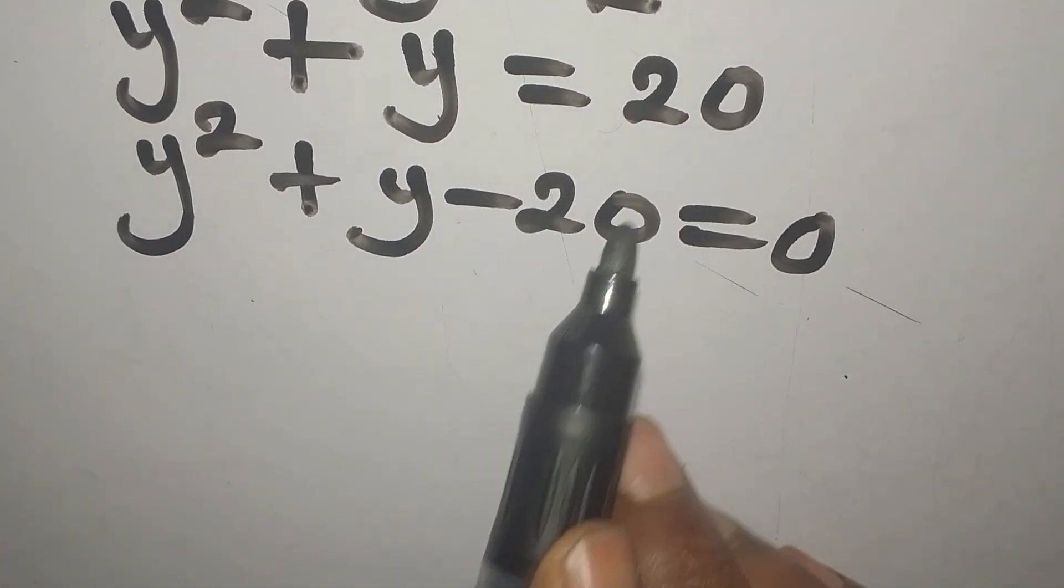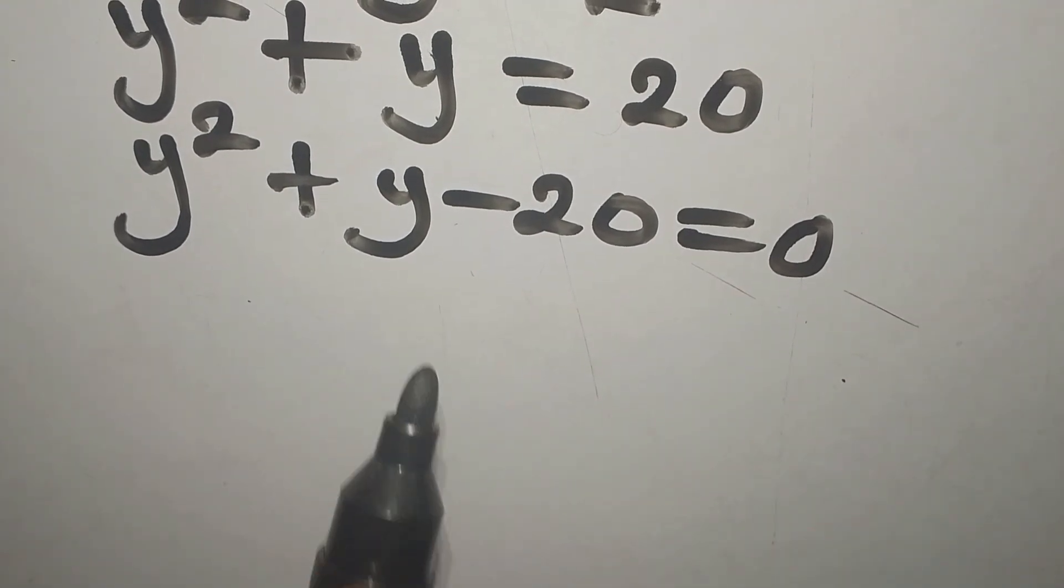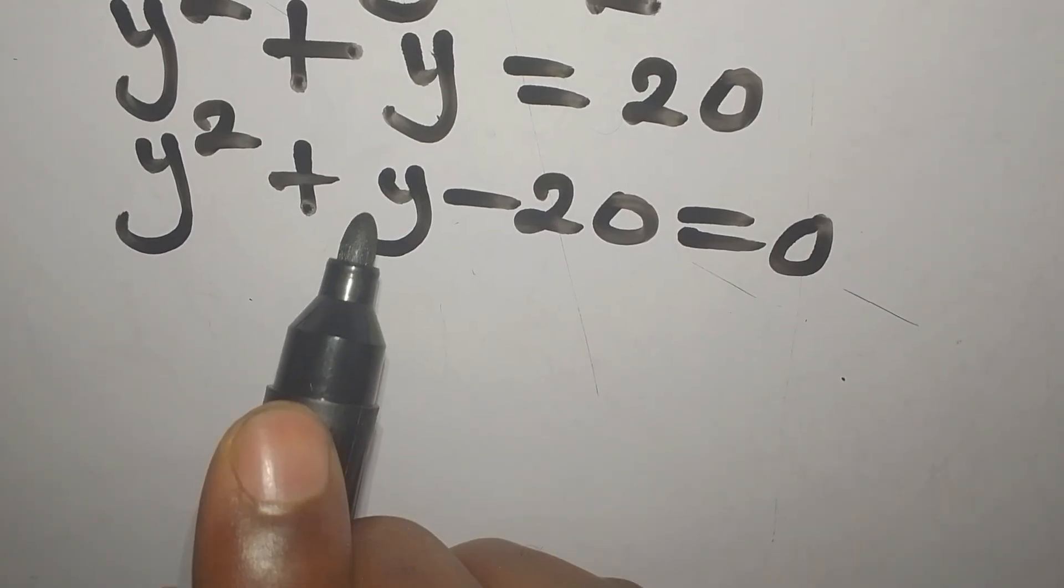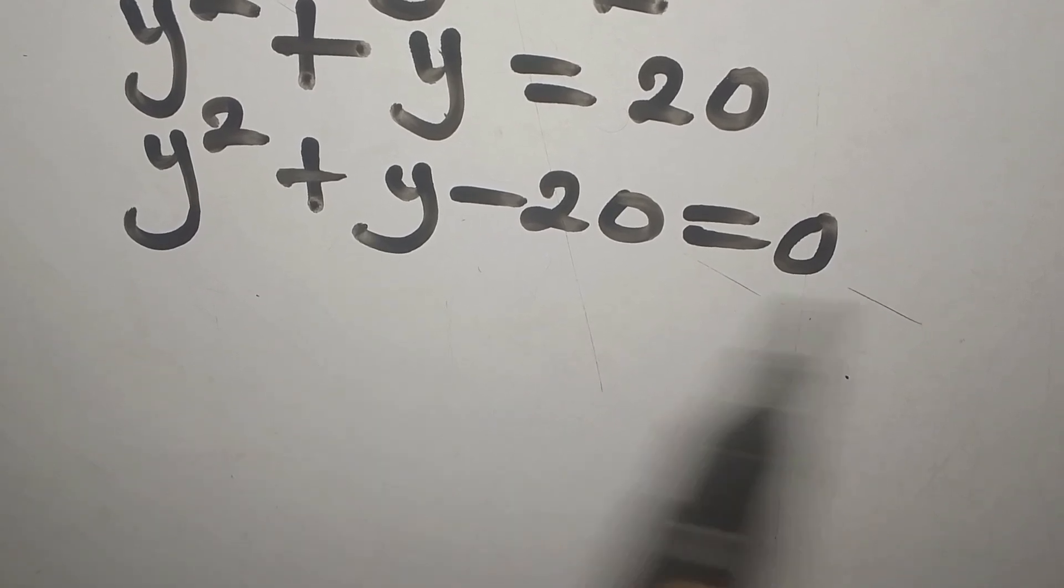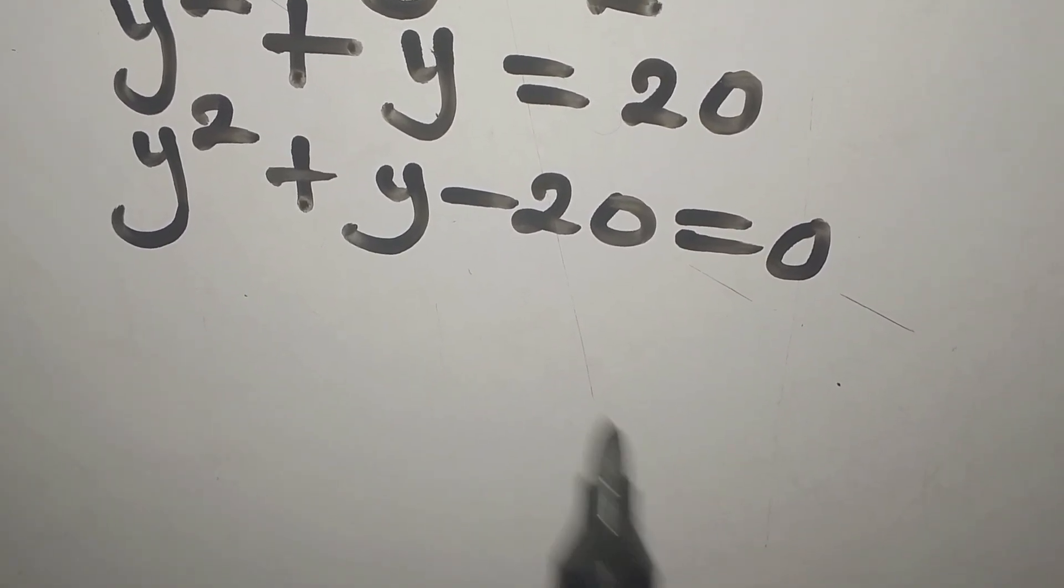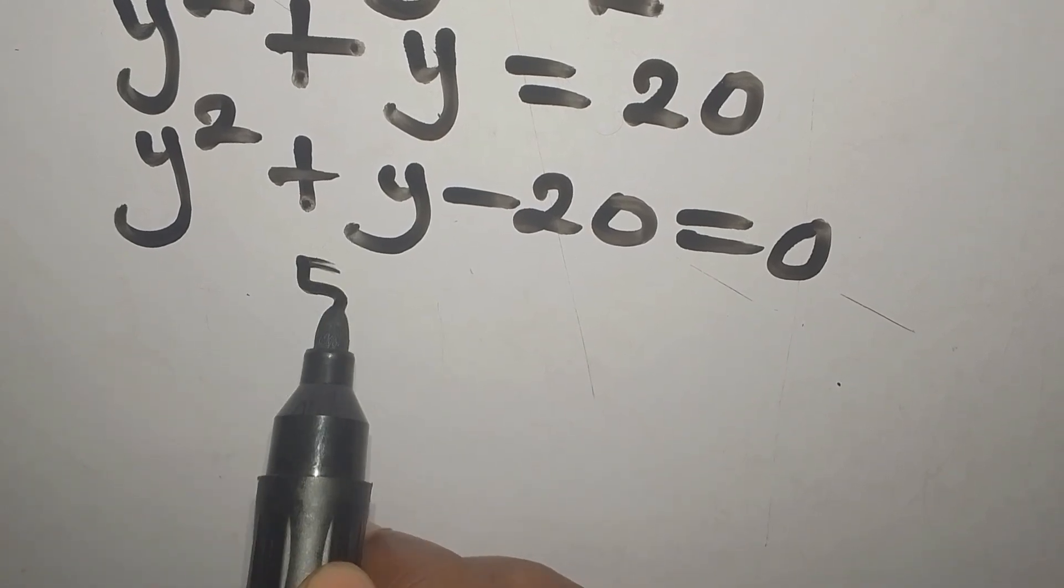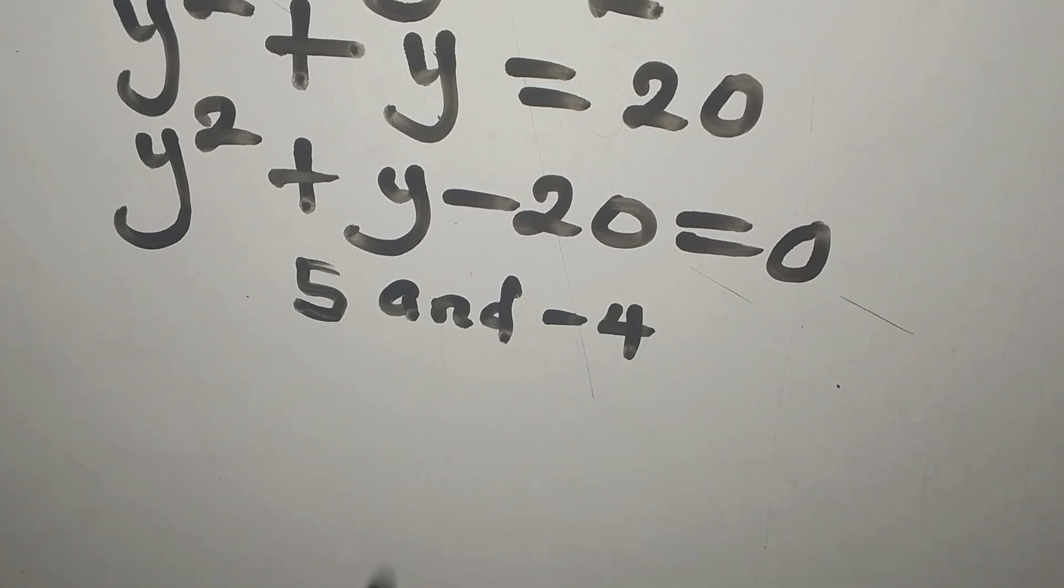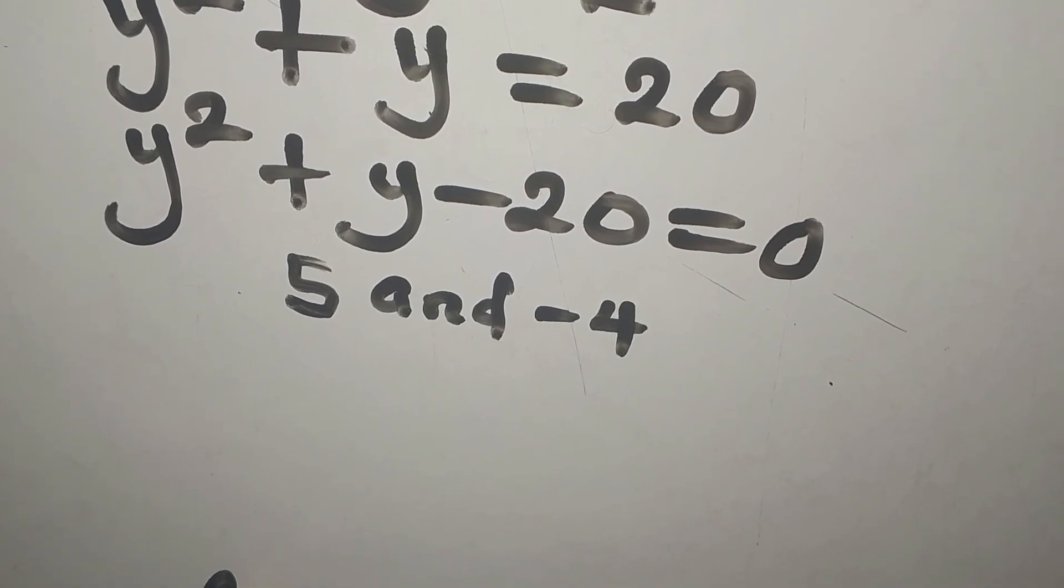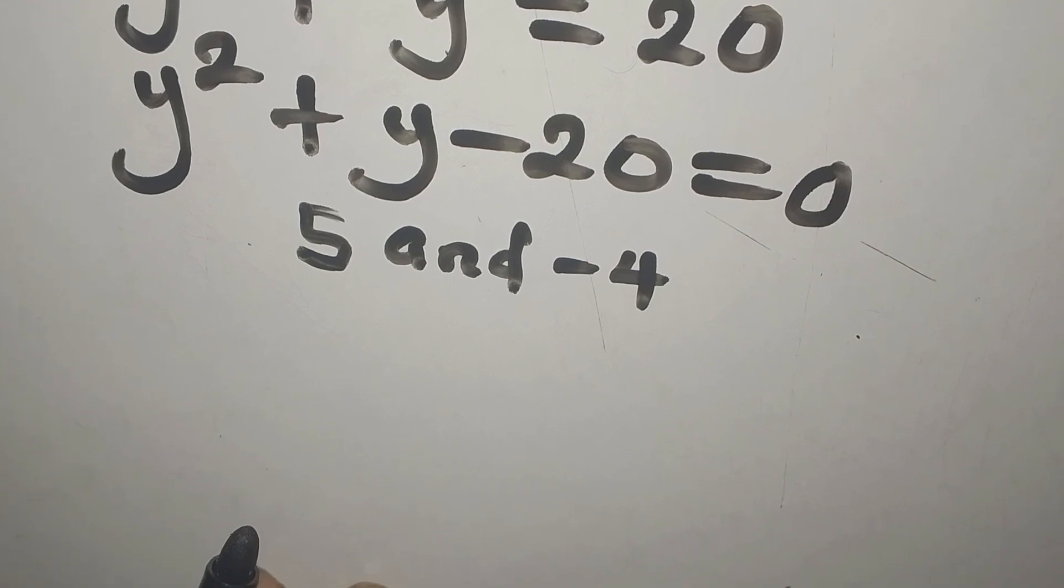Are there 2 numbers we'll multiply to get minus 20? Yes, there are 2 numbers. The 2 numbers if we add, are we going to have positive 1? The answer to that is yes. So if that is the case, let's bring out the 2 numbers. The 2 numbers will be 5 and minus 4. So if you multiply these 2, you're going to have minus 20. If you add both of them, you'll have positive 1.